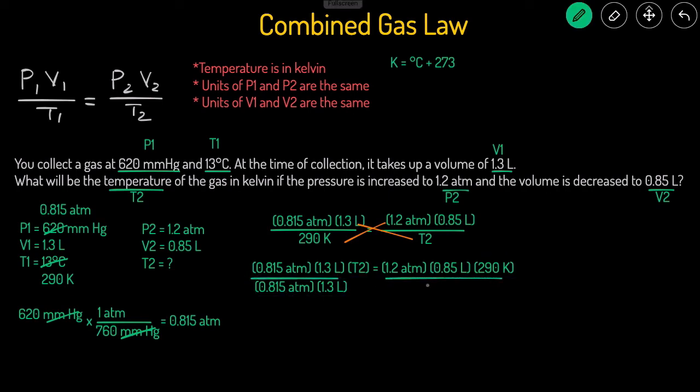The way we get rid of that is we're just going to divide those from both sides. We'll divide that on the left and divide that on the right. When we divide that, these cancel out, so we're left with T2 equals these three numbers multiplied together divided by these two numbers.